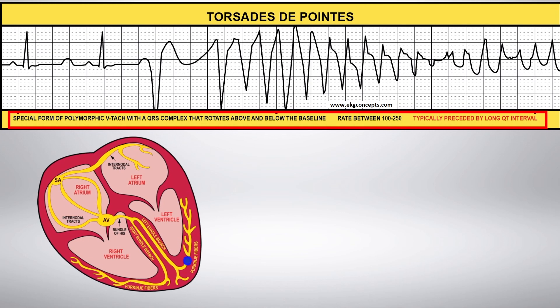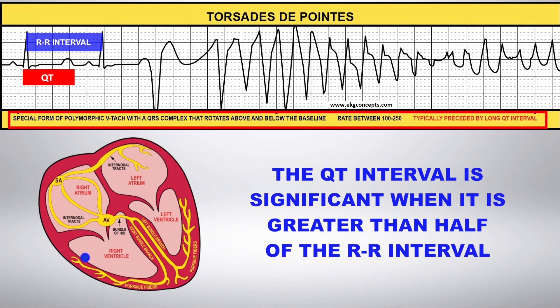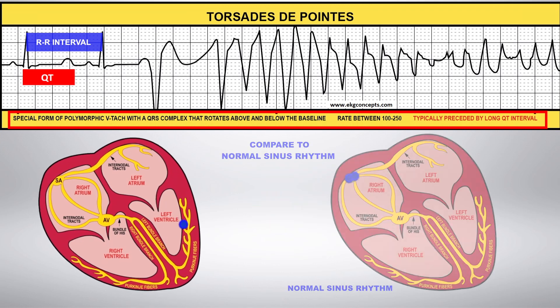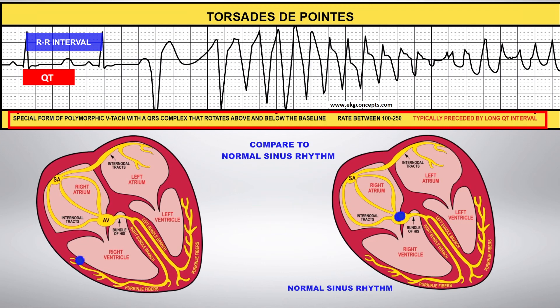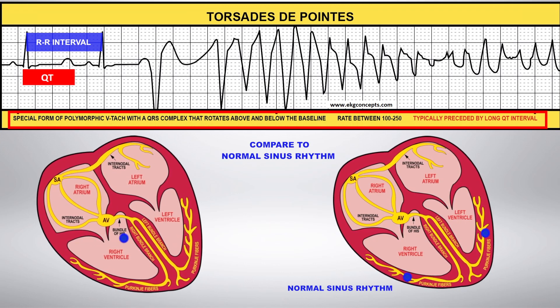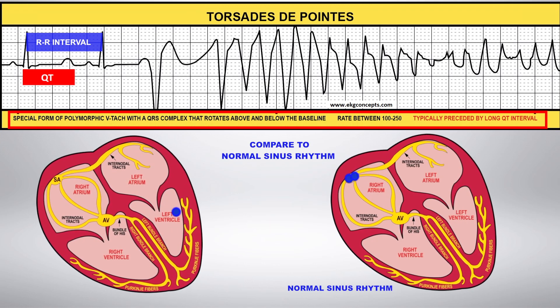Torsades is typically preceded by a long QT interval. The QT interval is significant when it is greater than half of the R-to-R interval. Compare this to normal sinus rhythm.